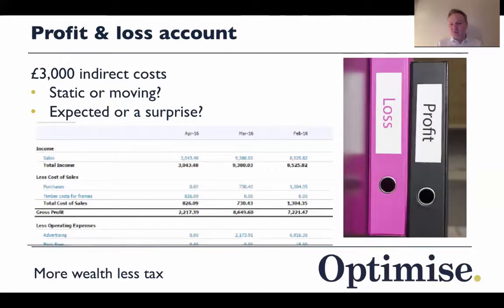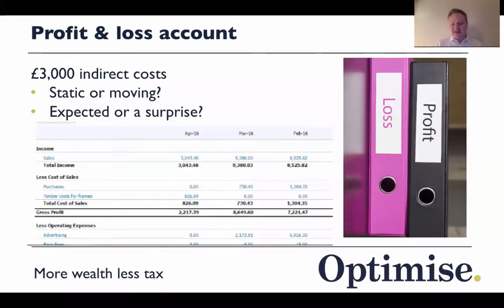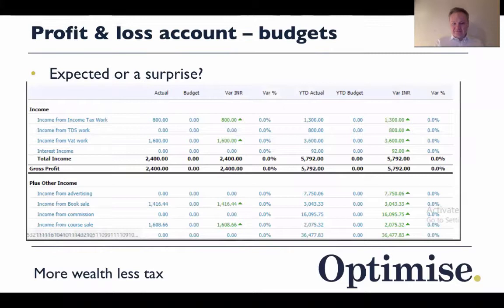Looking at your numbers month in, month out in Xero or QuickBooks is the best way to control your business. You can't do any of this if you're using bin liners to store financial information and cobbling a spreadsheet together two months before your submission date. That's far too late — 18 months have passed and you are probably making a lot less money than those who keep on top of their finances monthly.